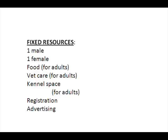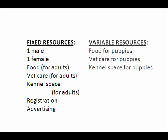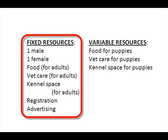Then there are also resources like registration and advertising. Resources that will change with the number of puppies that I produce are my variable resources. These would include food, vet care, and kennel space for the puppies. The more you produce, the more of these resources you'll need. Your fixed costs, then, are the costs of the fixed resources.